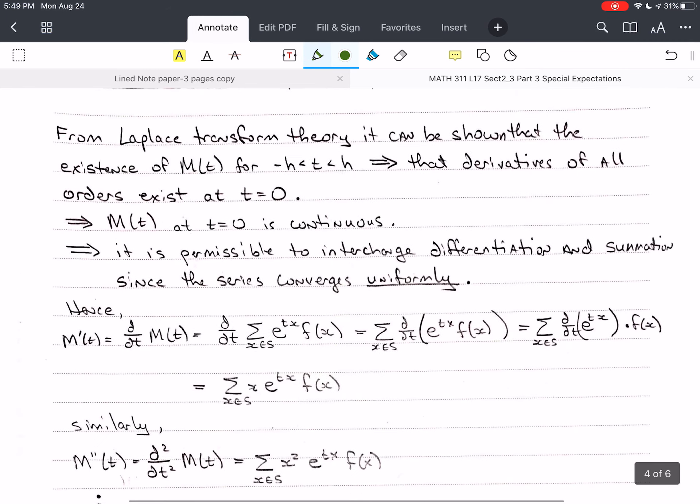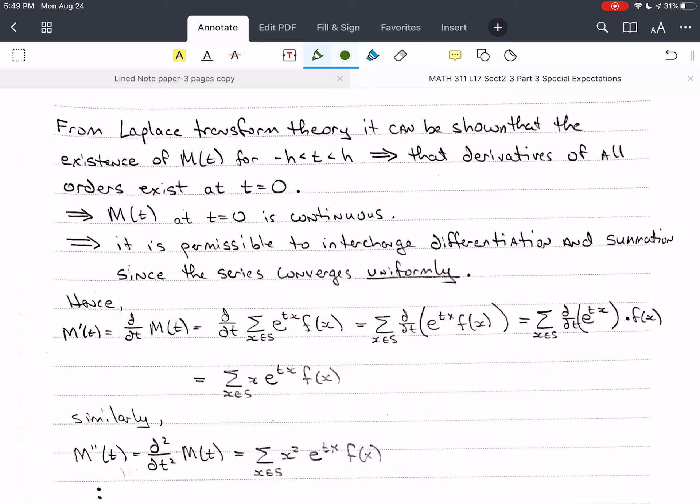So today, we're going to discuss the moment-generating function techniques for generating moments. It's a moment-generating function. We're going to generate those moments. So, from Laplace transform theory, really simple stuff, right? It can be shown that the existence of m of t for t between negative h and positive h implies that the derivatives of all orders exist at t equals zero.